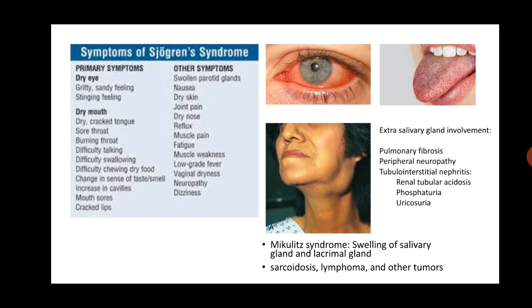Apart from these, the patient can develop swelling of all three major salivary glands, appearing as enlarged salivary glands in the neck region. When the parotid, submandibular and sublingual glands are all massively enlarged, the condition is known as Mikulicz syndrome. However, Mikulicz syndrome is not confined to Sjögren's syndrome — it can also be seen in sarcoidosis, lymphomas and other conditions of the salivary gland.